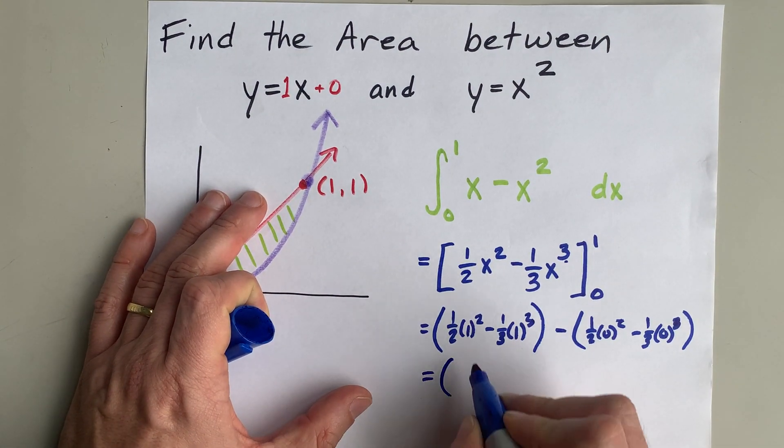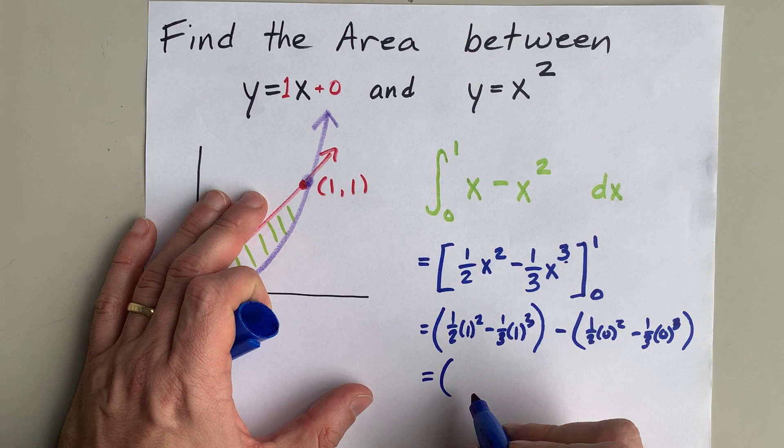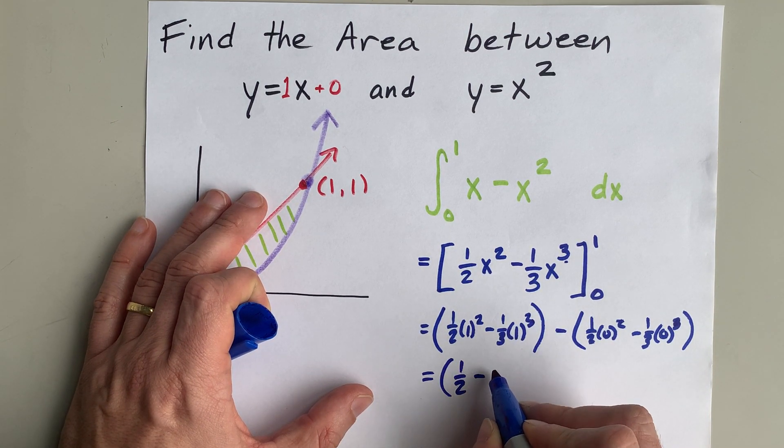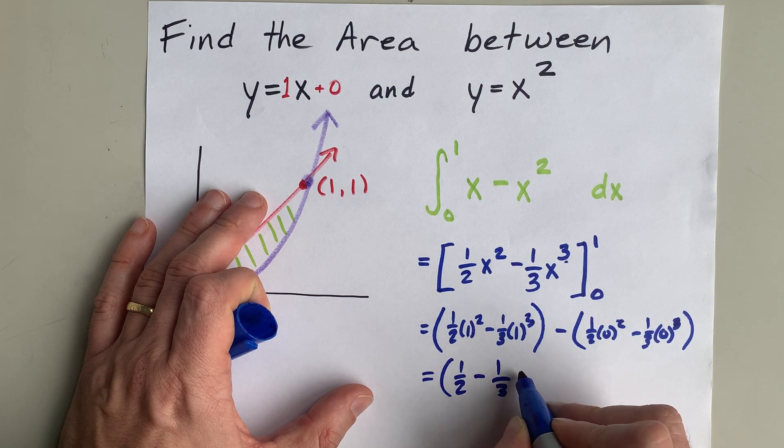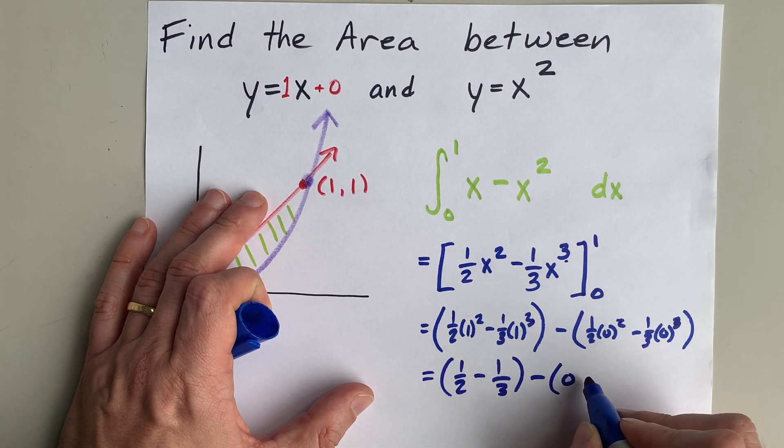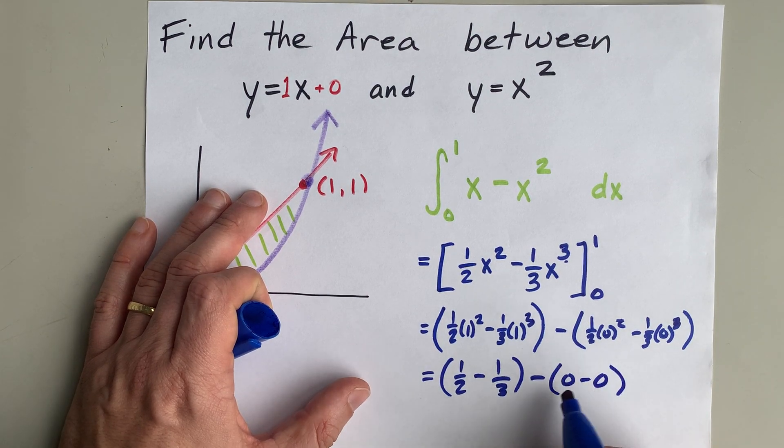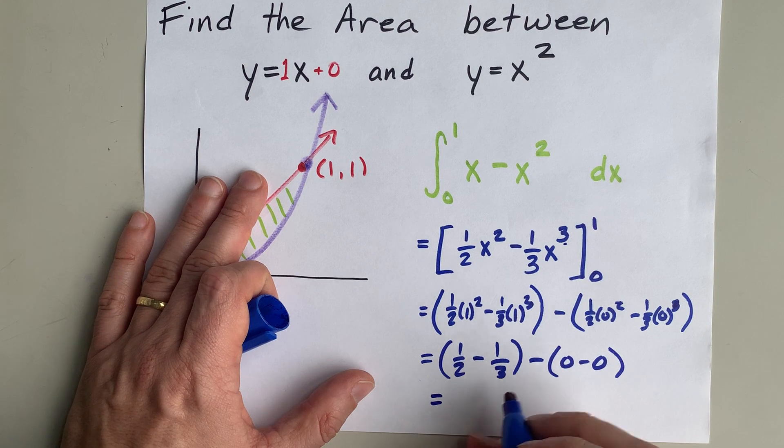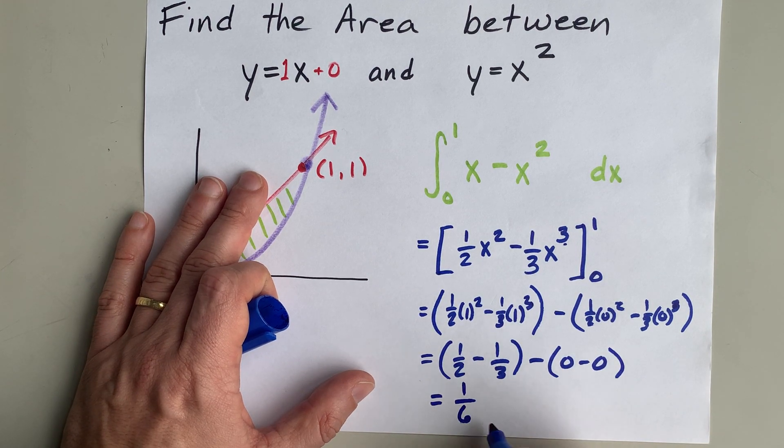So, math-wise, 1 half times 1 squared is 1 half. 1 third times 1 cubed is 1 third. And I'm going to subtract 0 minus 0. Well, that's nothing, minusing 0. And so I end up with 1 half minus 1 third, which ends up being 1 sixth.